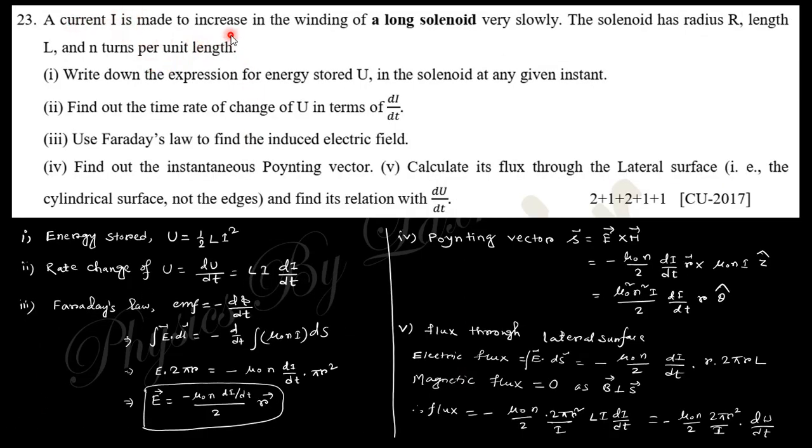Next: A current I is made to increase in the winding of a long solenoid very slowly. The solenoid has resistance R, length L, radius r, and n turns per unit length. Write down the expression for energy. Energy is ½LI².